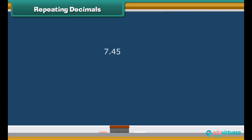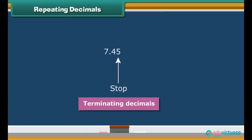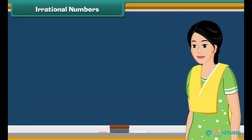And the decimals that stop are called terminating decimals. Some decimals called irrational numbers don't end or repeat.